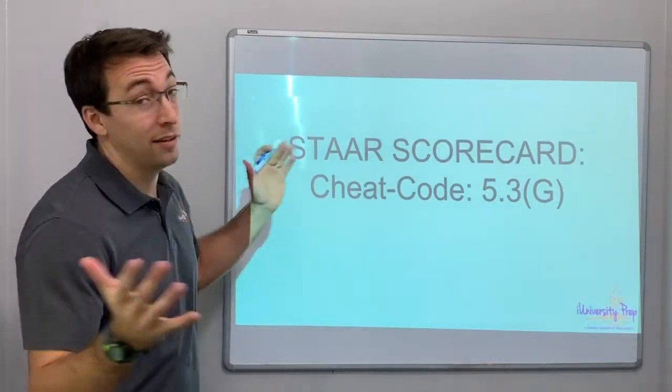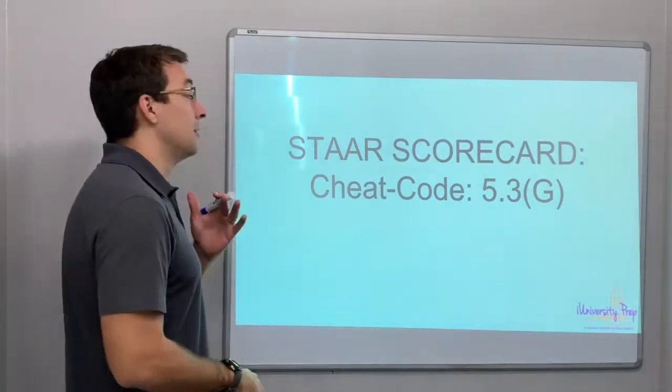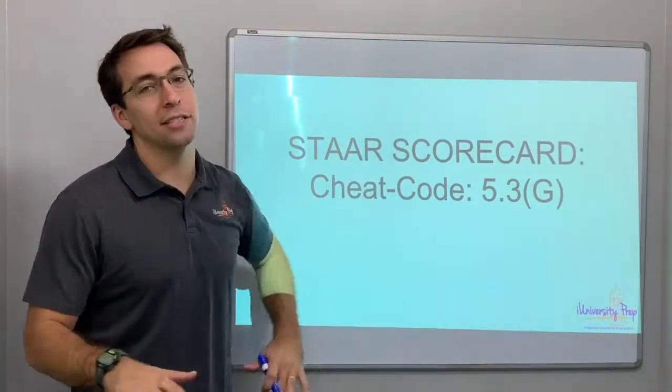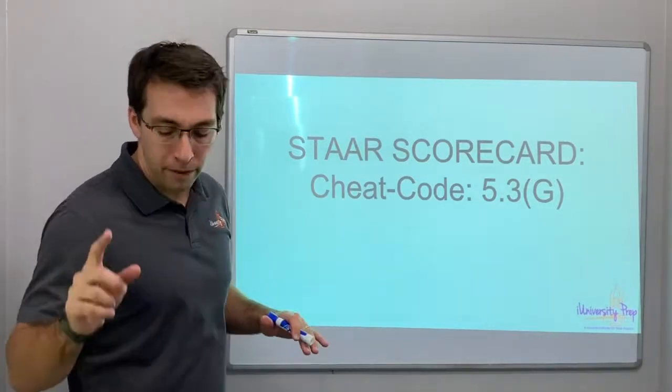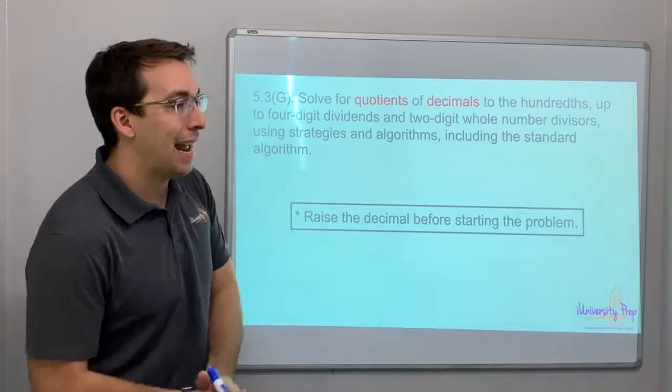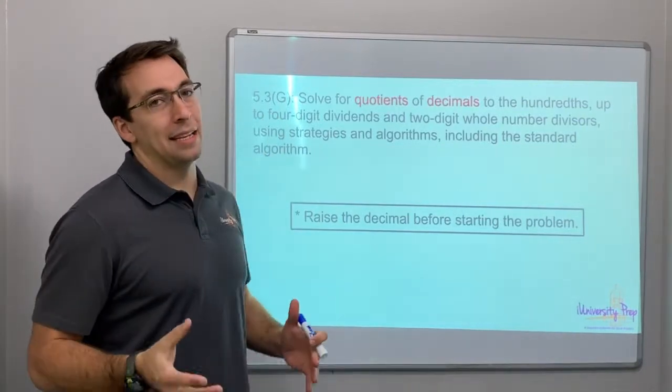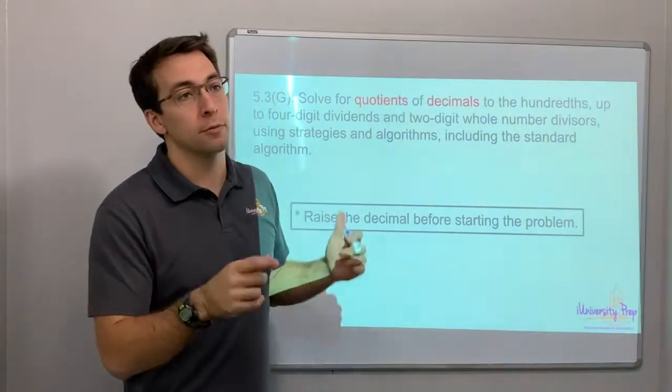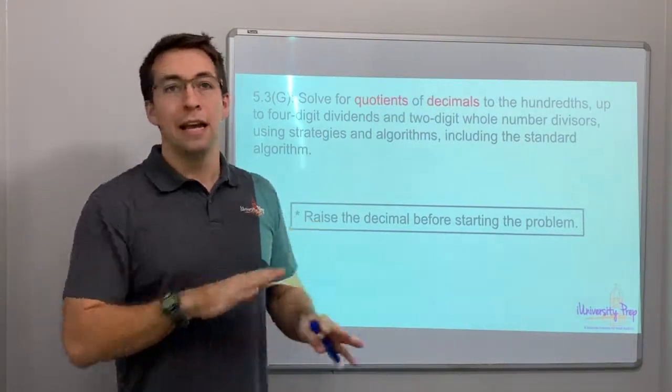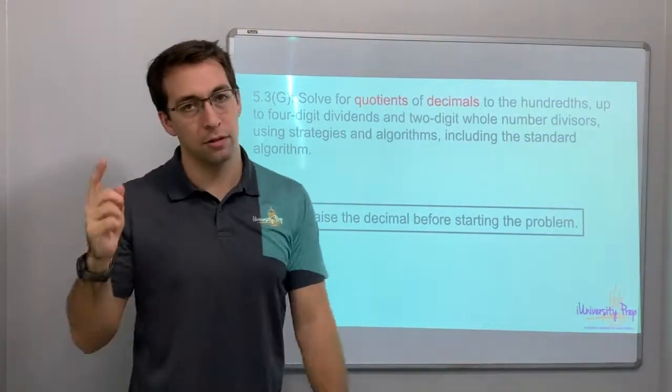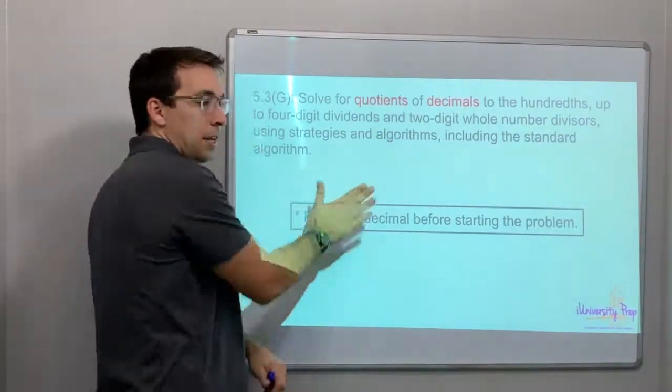Good afternoon, good morning, good evening. Star Scorecard Series Cheat Code 5.3 G - solving quotients of decimals, so division of decimals using pictures. The G, there's no pictures, you have to be able to divide decimals.